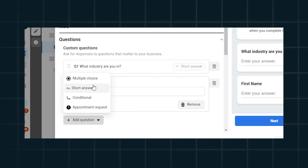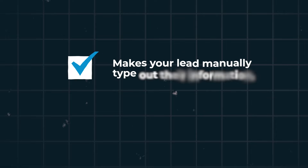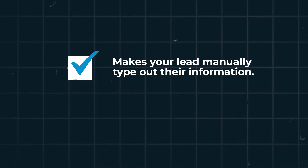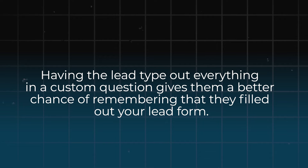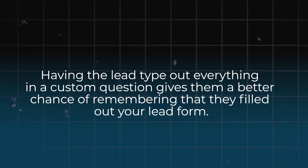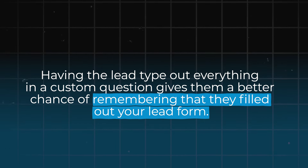Add the name, number, and email as custom short answer questions. This will ensure that your lead is having to type out their information and that you get their updated information. Because when Facebook pre-fills that info, it's pre-filling it with whatever info it has on file — and how many of us created our Facebook accounts with a dusty email address that we never check. Having the lead type out everything in a custom question gives them a better chance of remembering that they've filled out your lead form, and it gives you a better chance of obtaining valid information that you can follow up on.